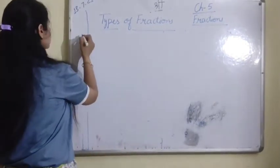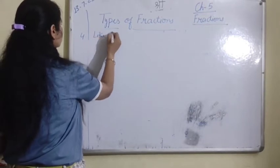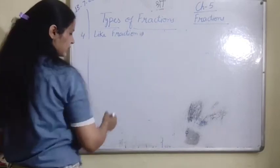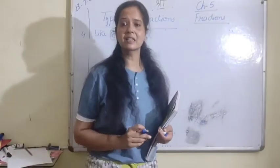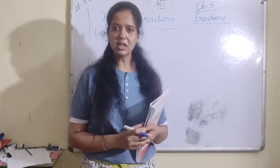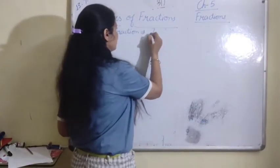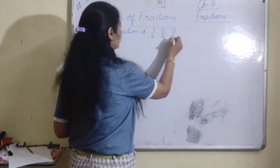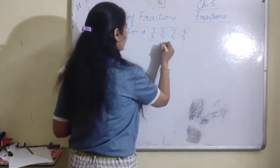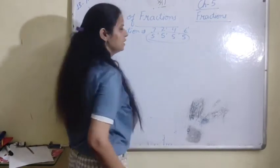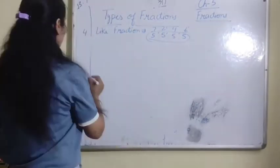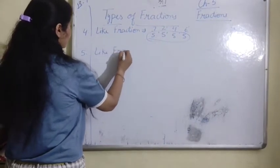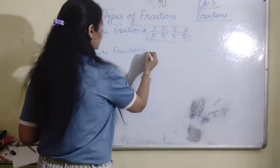Next is like fractions. Like fractions are those fractions in which the denominators are the same. For example, 7 upon 5, 2 upon 5, 4 upon 5, 6 upon 5 — the denominator 5 is the same, so these are like fractions. Jahaanpar denominator same ho, woh like fractions hain.